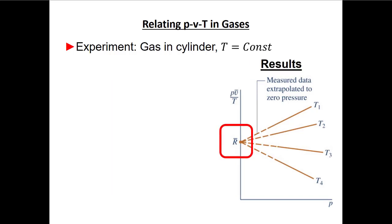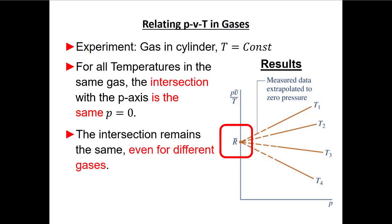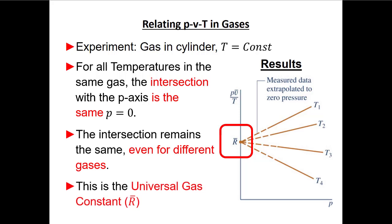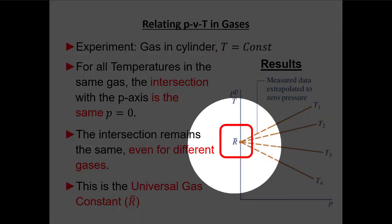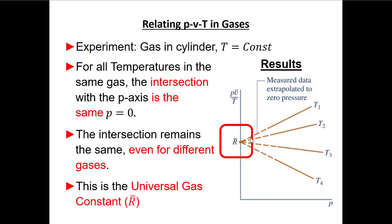You can do this experiment with one gas at different temperatures, or with different gases at different temperatures, and the point where the lines intersect the vertical axis always stays the same — it doesn't matter what temperature or what gas. That's what makes this the universal gas constant. Someone then came up with the idea: if we plot P·v̄ divided by R̄·T on the vertical axis, everything would intersect at a value of one.